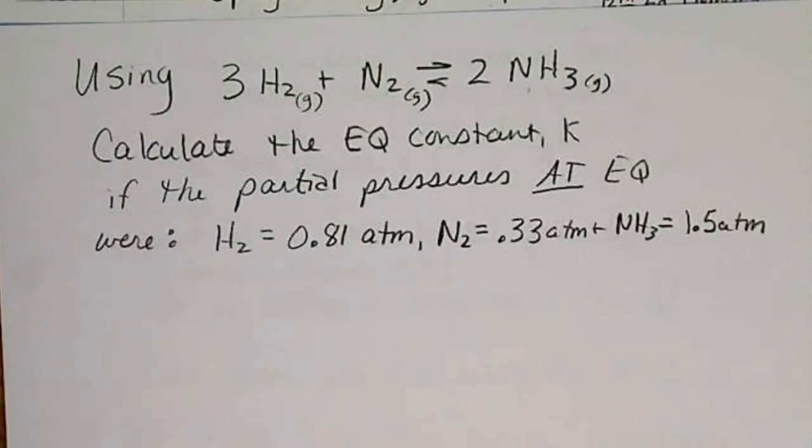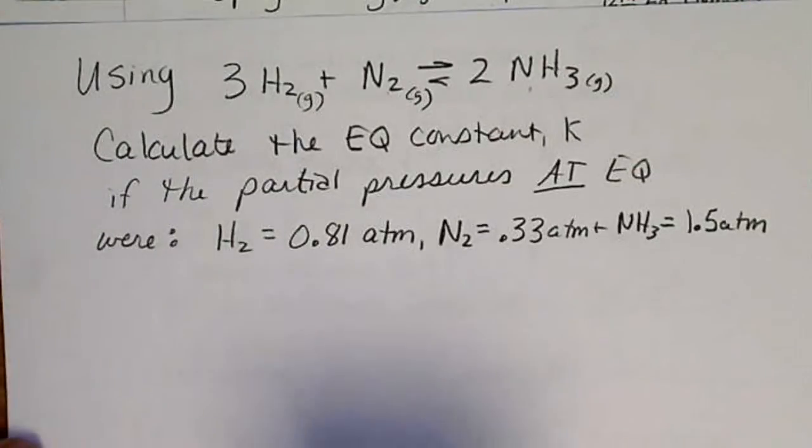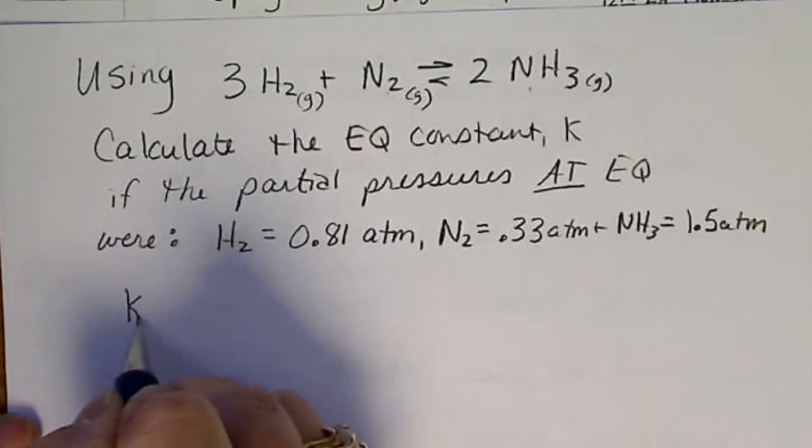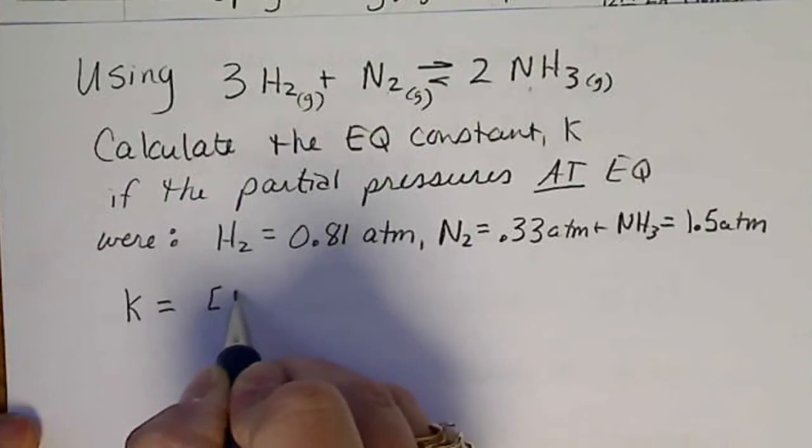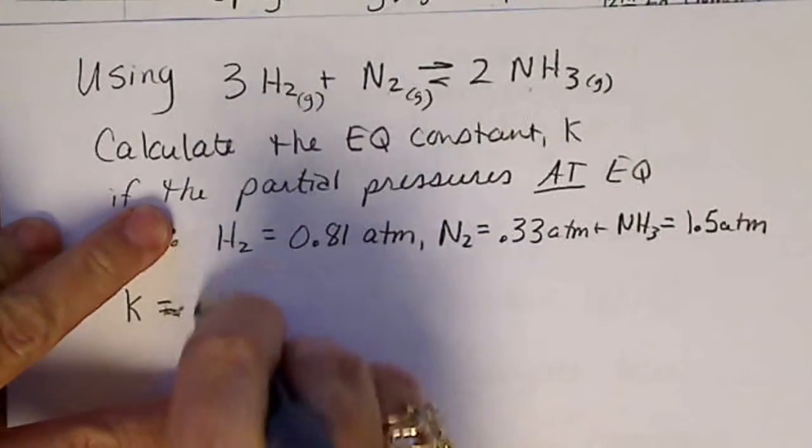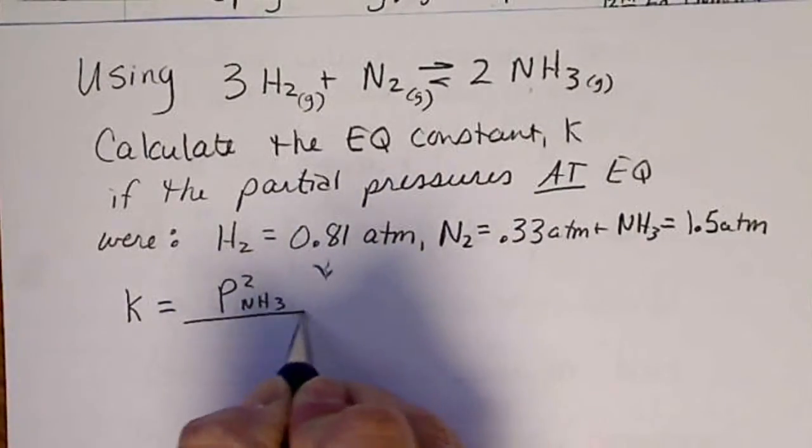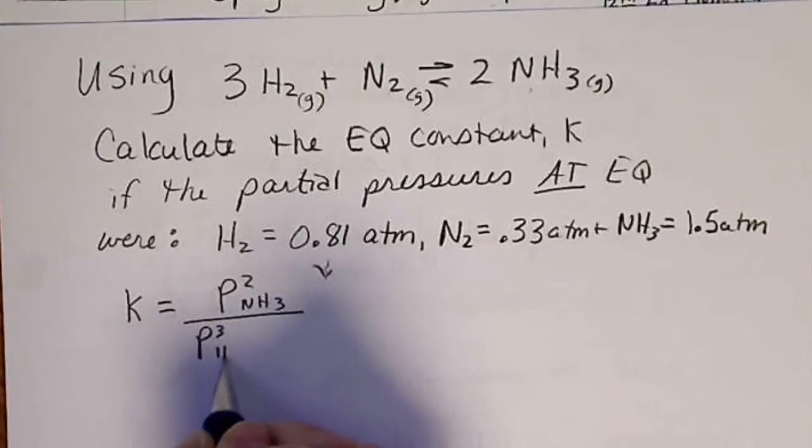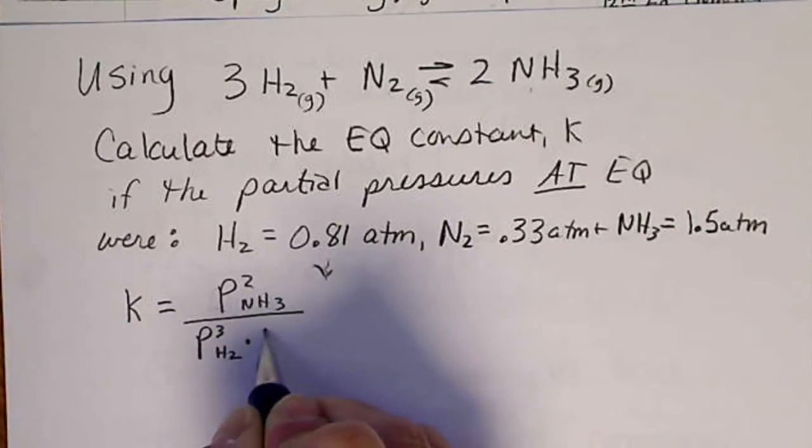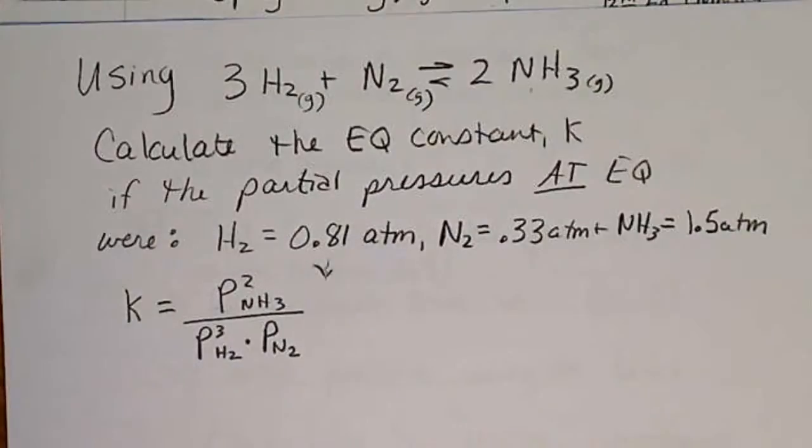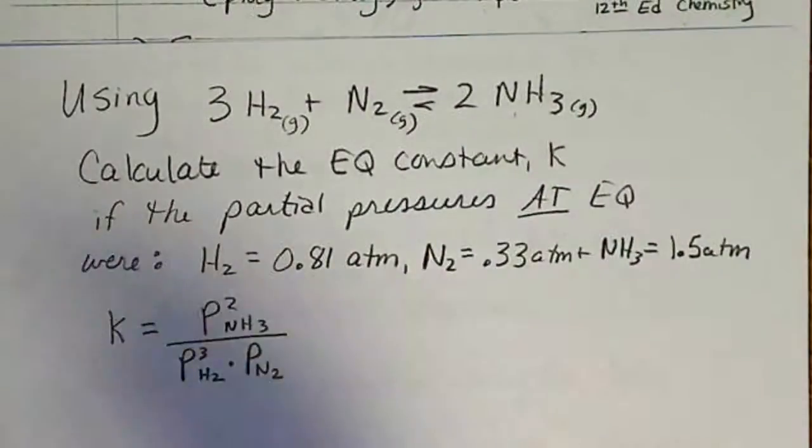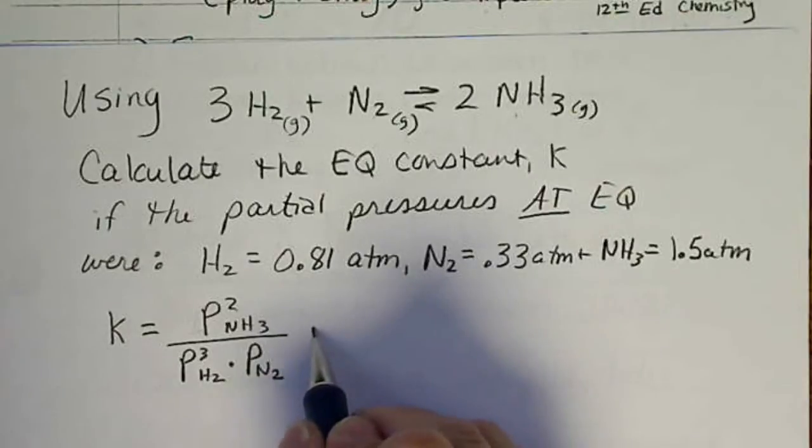So if we write the expression for that, while I'm turning my phone to silent, we would write K equals, and since we're given pressures, we could write it as the pressure squared of NH3 divided by the pressure cubed of hydrogen and the product of the other reactant, nitrogen, goes down here. And so we're given these values, and we're just going to plug them in.